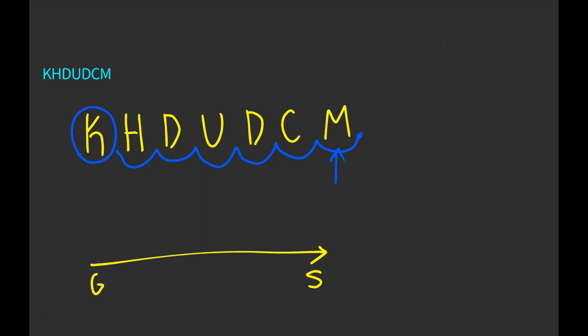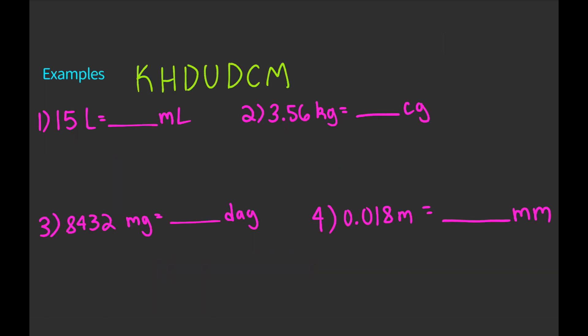Now you've probably heard of a lot of ways to remember KHDUDCM. The one I've heard the most and is easiest for me to remember is "King Henry doesn't usually drink chocolate milk." And there's also my favorite variation: "King Henry died drinking chocolate milk." Feel free to think of your own, but what's important is you remember these letters in that order. Alright, so let's move on to some examples.